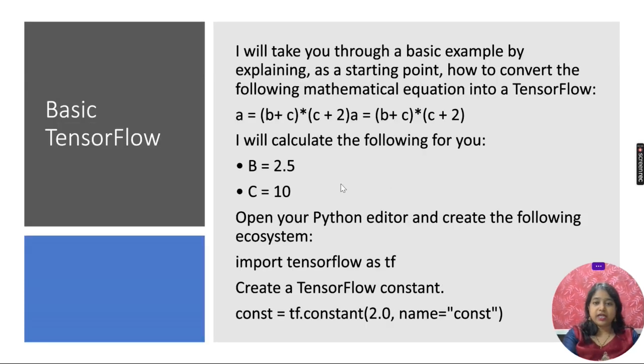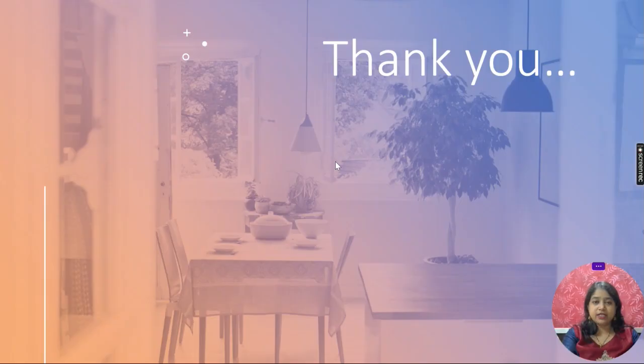Basic TensorFlow. I will take you through a basic example by explaining how to convert the following mathematical equation into a TensorFlow: a = (b + c) * (c + 2a). I will calculate this for you: B = 2.5, C = 10. Open your Python editor and create the following ecosystem: import tensorflow as tf. Create a TensorFlow constant: const = tf.constant(2.0, name="const"). Accordingly, we can work on the Python editor. With this, we have come to end of our chapter number 10 in unit number 5. Thank you.